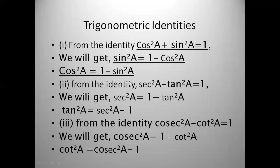From the first identity, sin²θ plus cos²θ equals 1, we can get two more identities. If you transpose cos²θ to the other side, you get sin²θ is equal to 1 minus cos²θ. This you can also use for solving the sums of exercise 11.4. Then, if you transpose sin²θ to the other side, you get cos²θ is equal to 1 minus sin²θ. These two we got from the first identity.